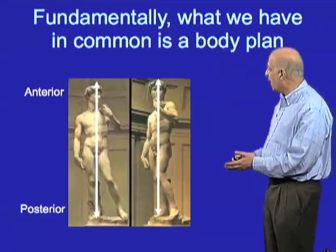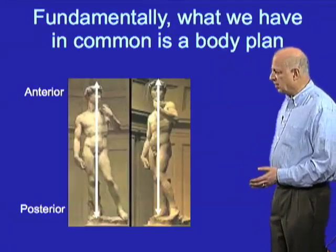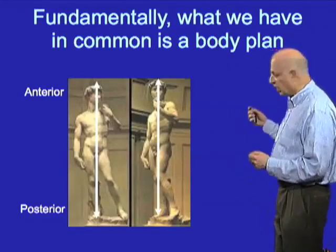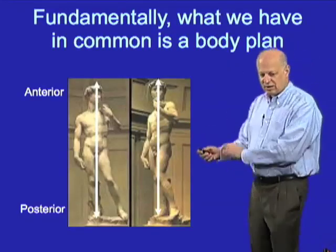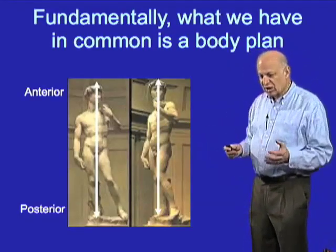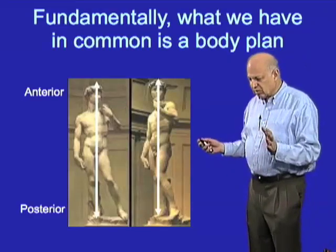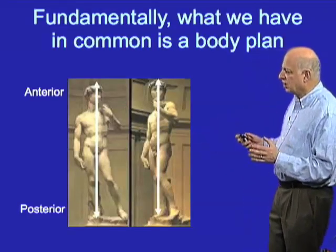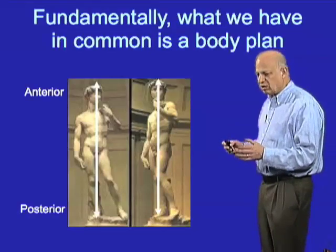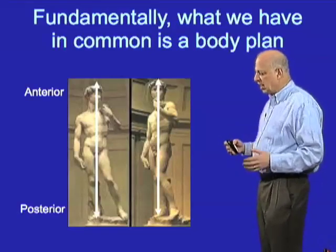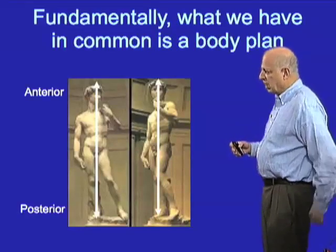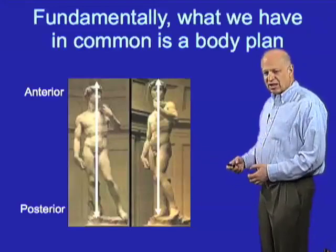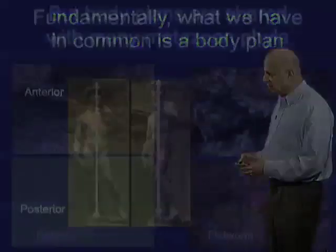Animals also have a right side and a left side, which are similar mirror images, though somewhat different in some cases. They also have a back side — a dorsal side — and a ventral side, and that's an important distinction as well.